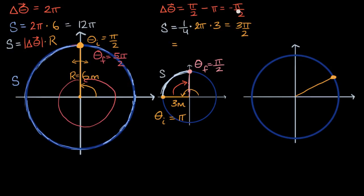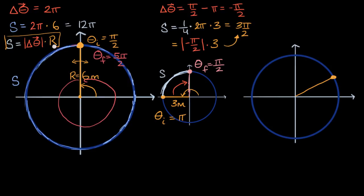Let's see if this is consistent with our formula. If we take the absolute value of our angular displacement — the absolute value of negative pi over two — and multiply it by the radius of three meters, we get positive pi over two times three, which is indeed three pi over two. So the formula holds up.